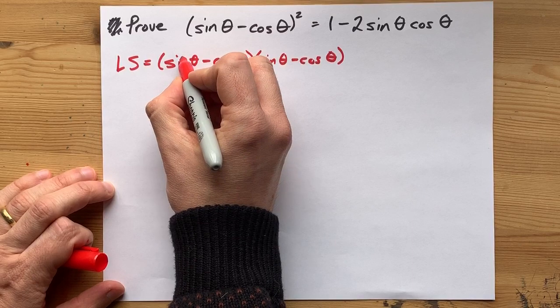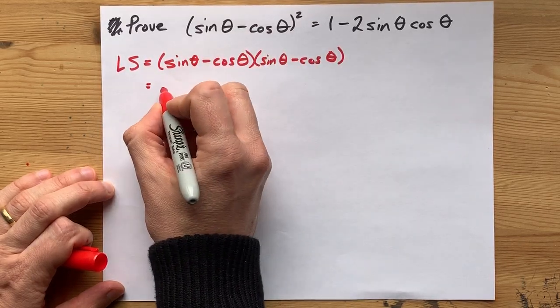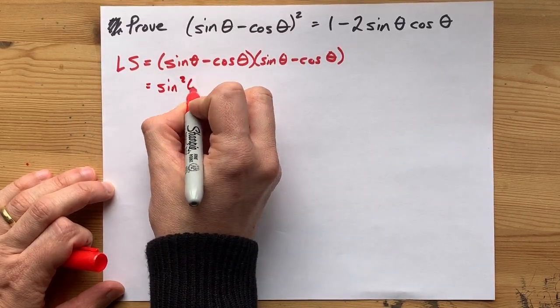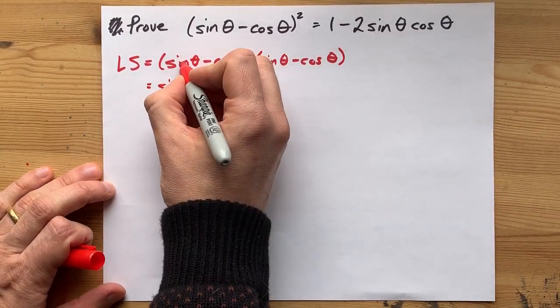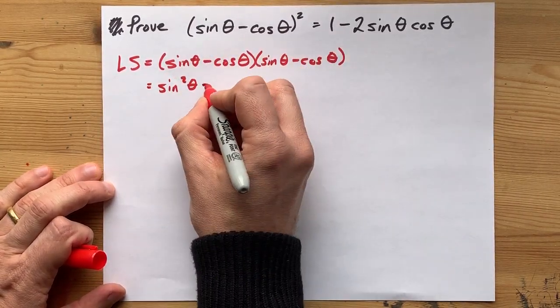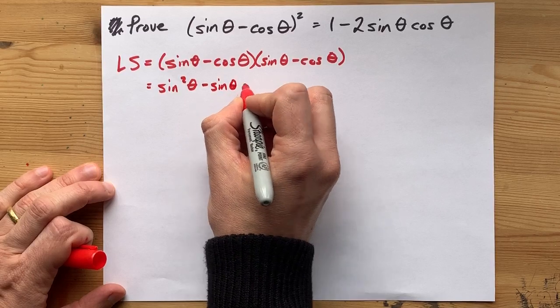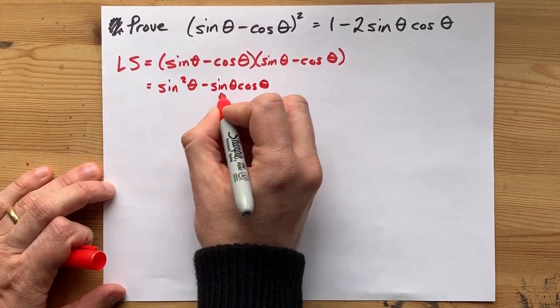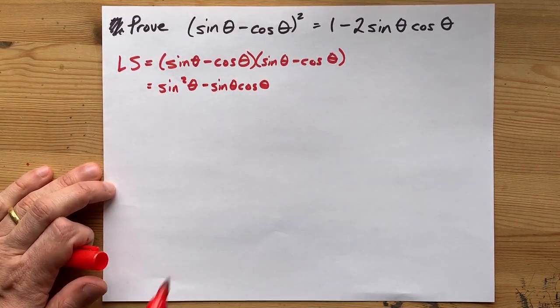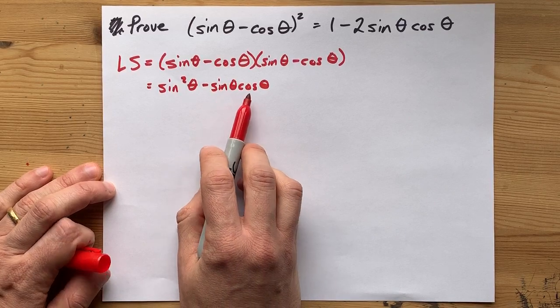Let's multiply the first times the first, that gives me sine squared when I do sine times sine. I have sine times negative cos, that's minus sine theta cos theta. I'm just ramming those together. We always write sine before cos, by the way.